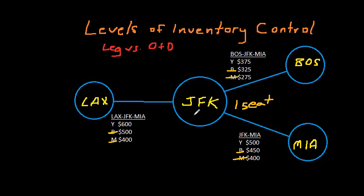So if the Los Angeles customer arrives first, then that's the customer who would book that seat and the network contribution would be $600.